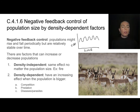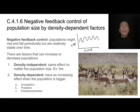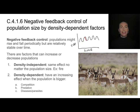All of these density-dependent factors bring populations back down when they're getting too high, and become less and less important when the population is low. The population then grows, creating this up-and-down negative feedback loop cycle.